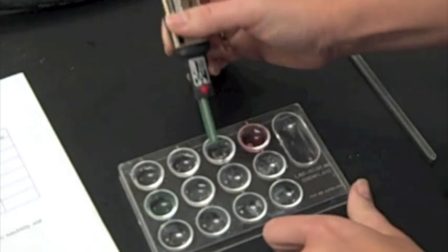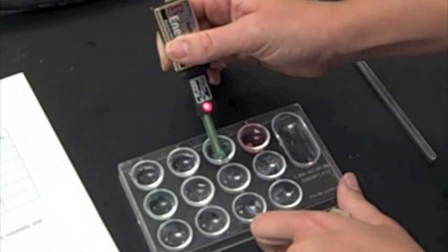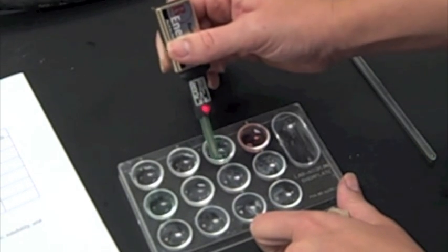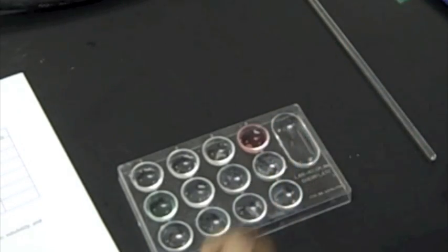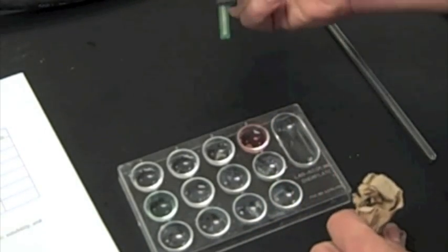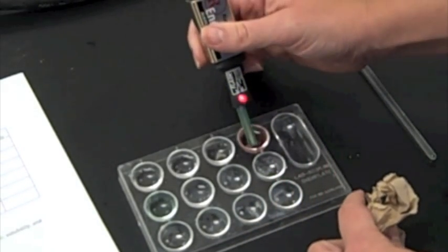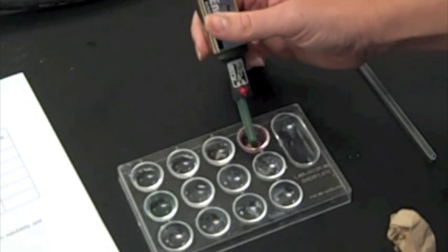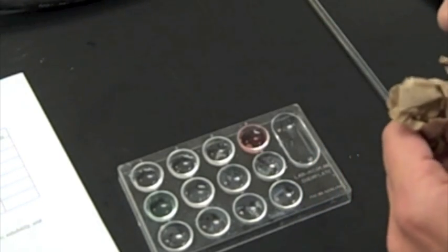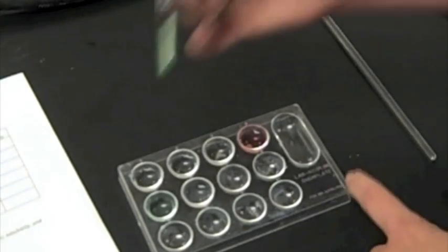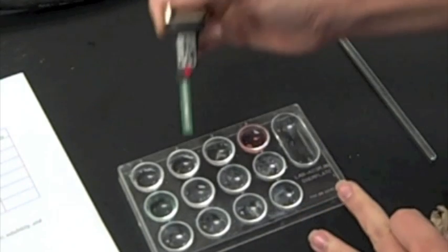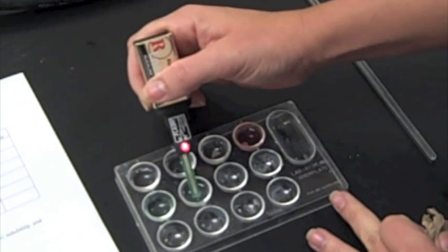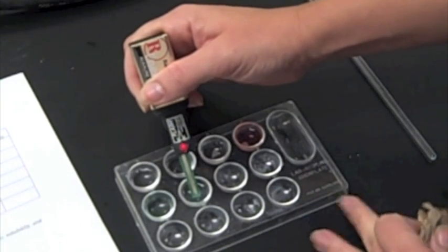Next up is the oxalic acid. And it is conductive, which makes sense because it's an acid. Then we have cobalt sulfate. It is also conductive, so positive test there. Nickel chloride is conductive. And last but not least, starch. That's a negative sign.